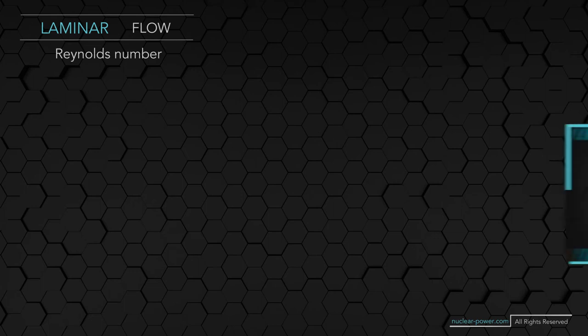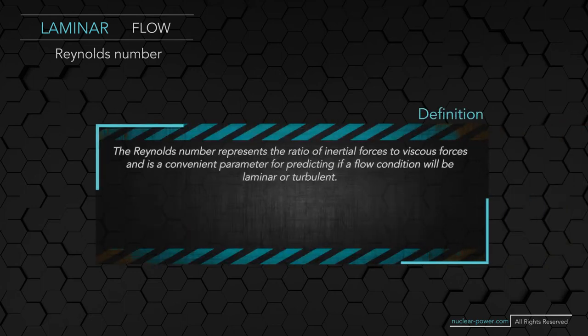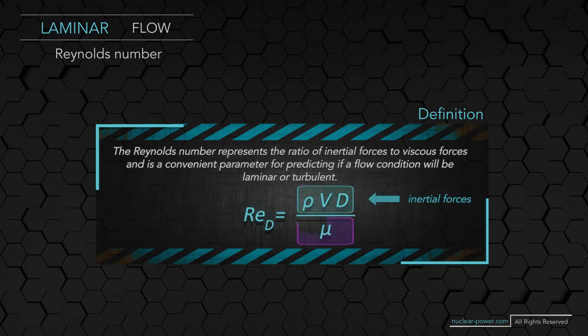When it comes to laminar flow, we must also define the Reynolds number, which is one of the characteristic numbers used for predicting whether a flow condition will be laminar or turbulent. The Reynolds number represents the ratio of inertial forces to viscous forces, as you can see in the formula. It's about how fast the fluid is moving relative to how viscous it is, irrespective of the scale of the fluid system. The Reynolds number is calculated using mean velocity, characteristic diameter, fluid density, and dynamic viscosity. It is valid for any fluid.